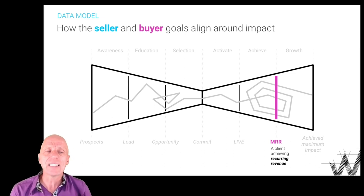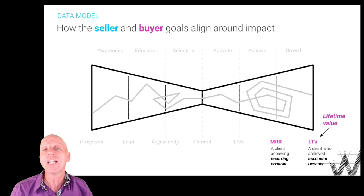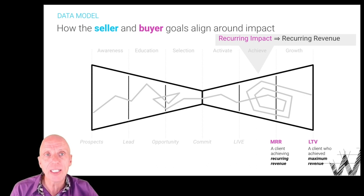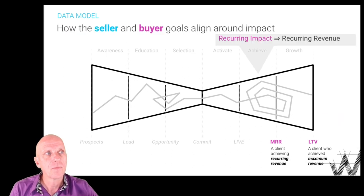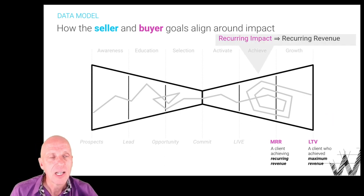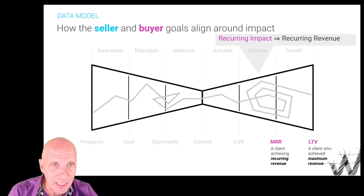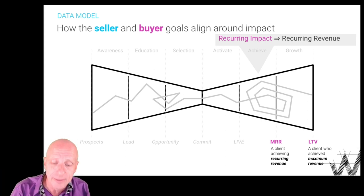Once that client creates more and more recurring revenue, at a certain point in time it achieves the maximum revenue possible. The client eventually graduates out — over five, six, seven years, we achieve lifetime value. The key here is this: recurring revenue is the result of recurring impact. Let me repeat that: recurring revenue is the result of recurring impact. That, ladies and gentlemen, is a success secret for all your SaaS business to understand — recurring revenue is the result of recurring impact. That is the key metric of all.